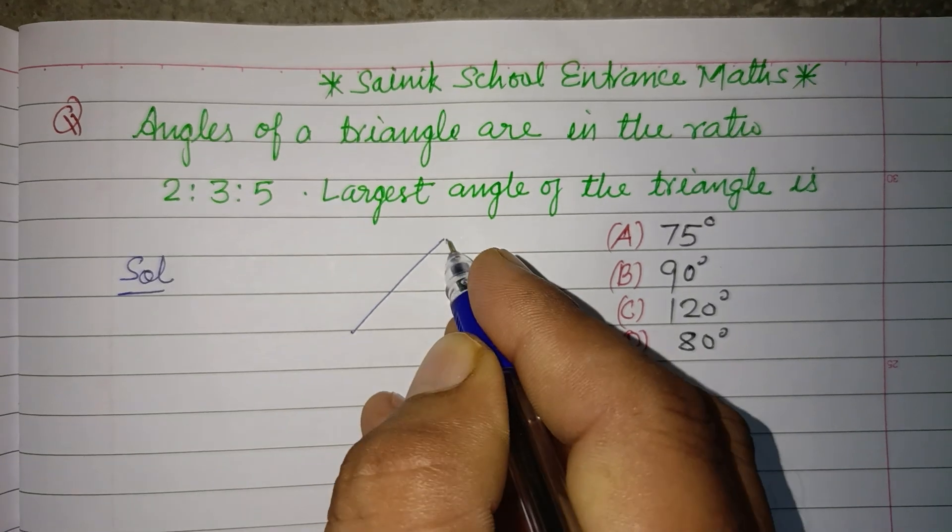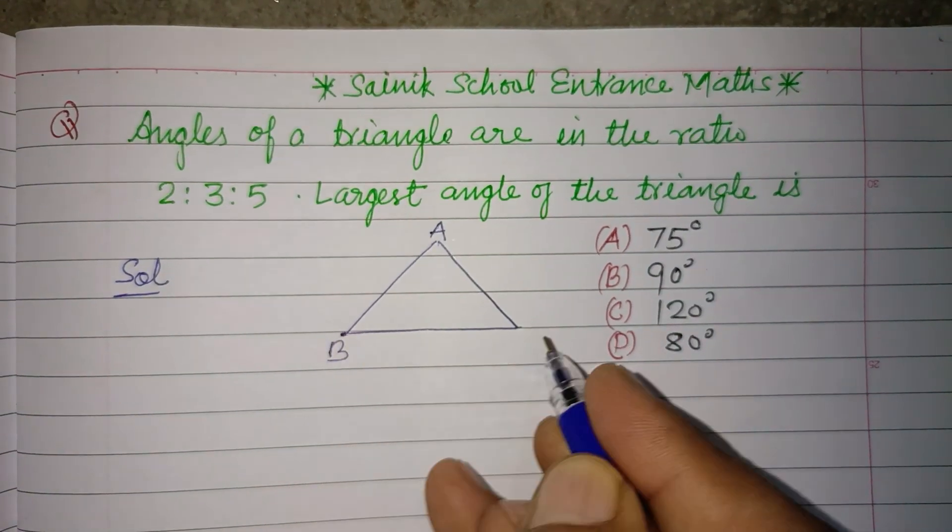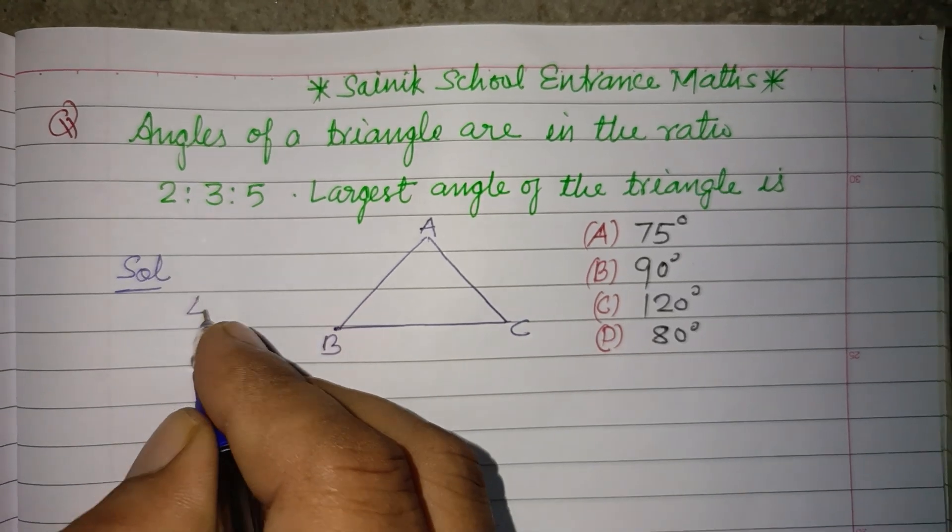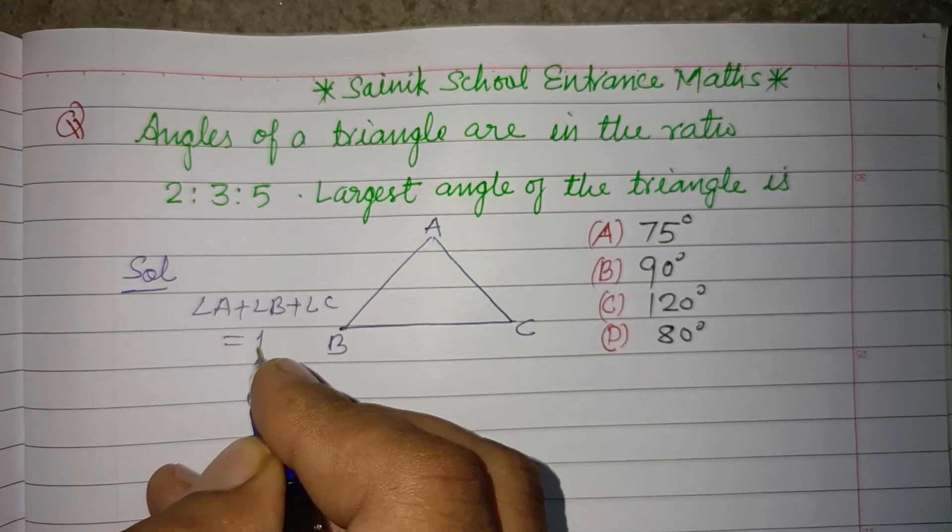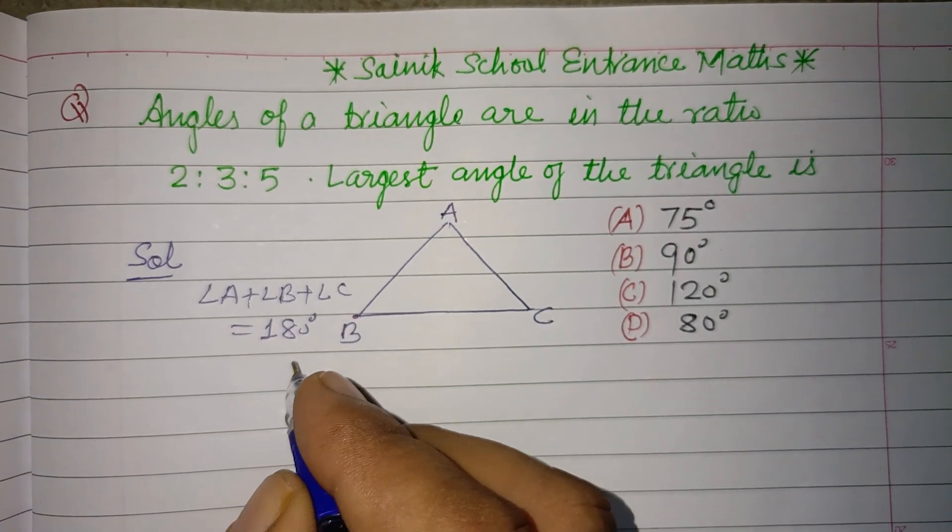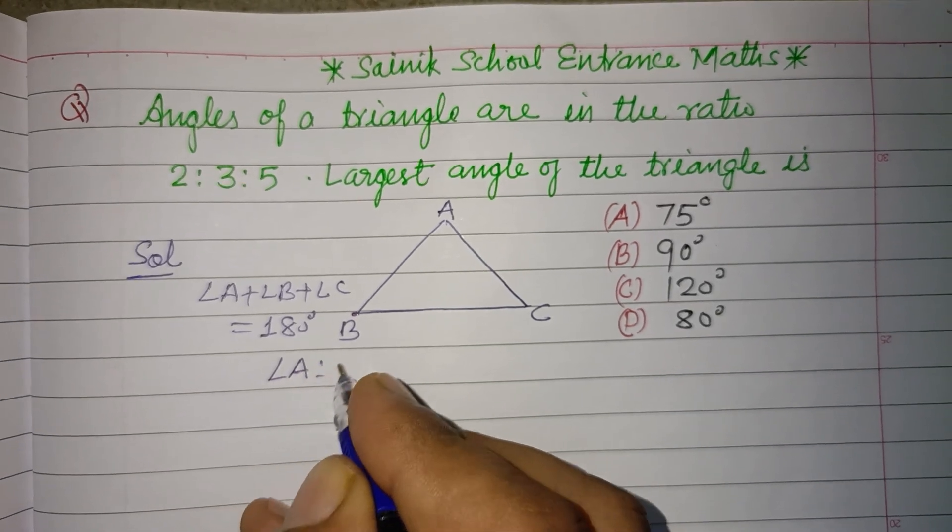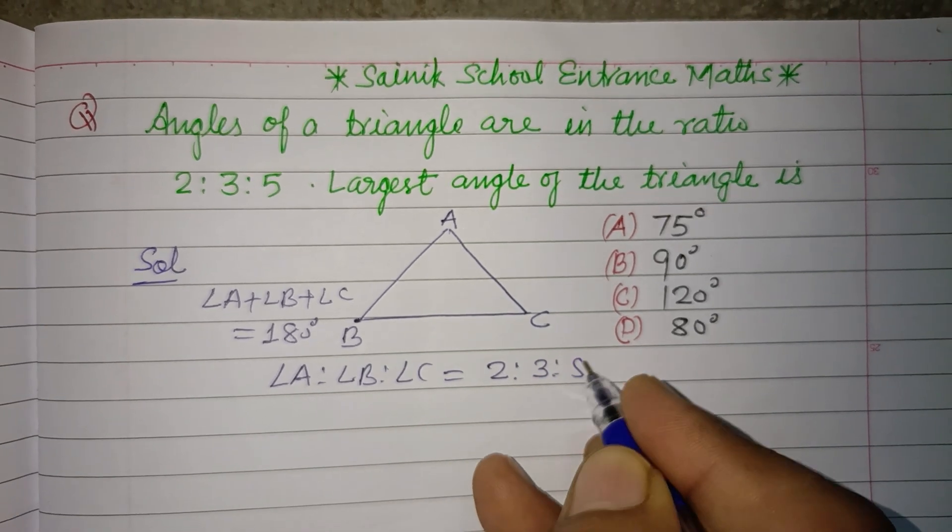So students, you know that in a triangle sum of all the angles, angle A plus angle B plus angle C, is 180 degrees by angle sum property. Here ratio of angle A, angle B, angle C is given to us as 2:3:5.